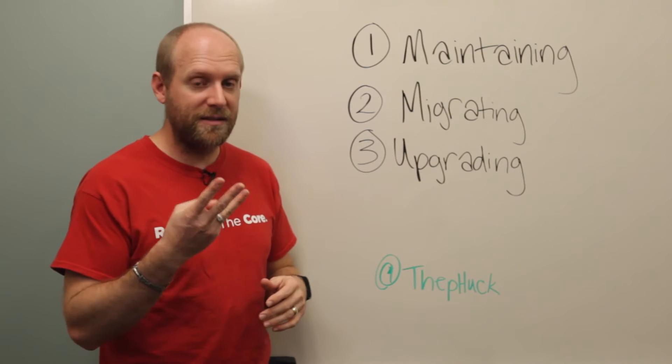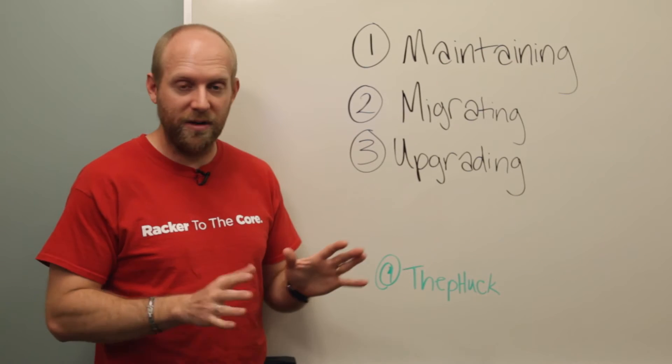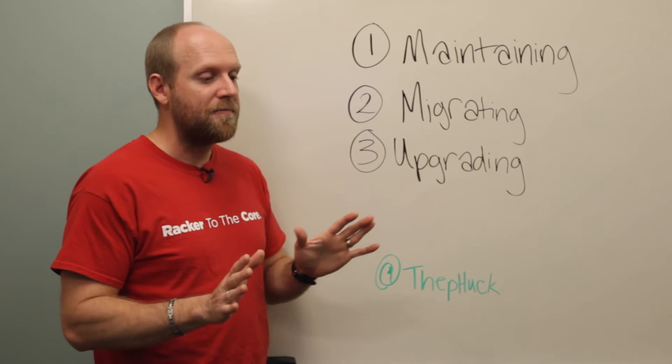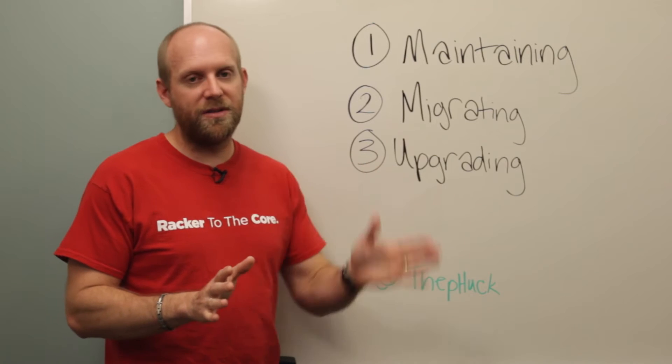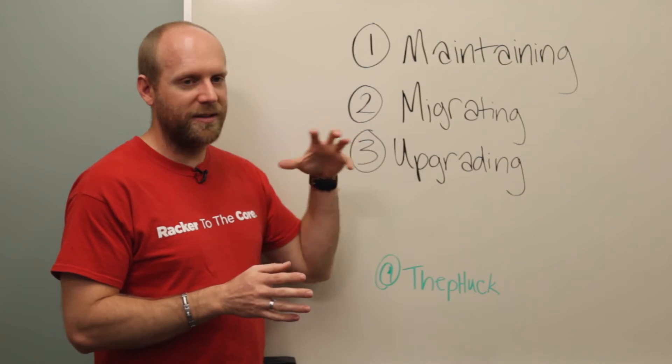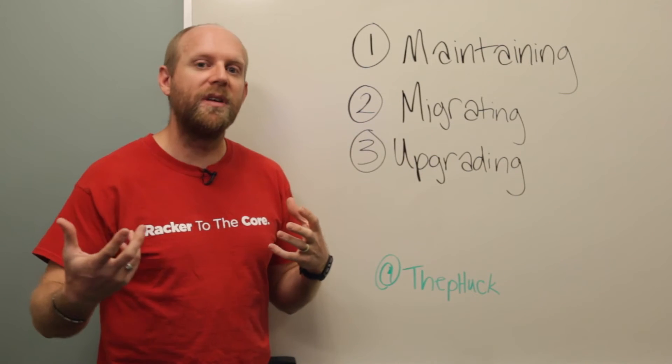say you have three data centers and you have pairing like A and pairing B or pairing one, pairing two, however you want to say it. You cannot migrate from pairing one to pairing two. You have to actually remove everything and then build the other side.